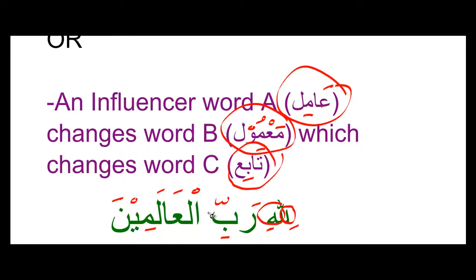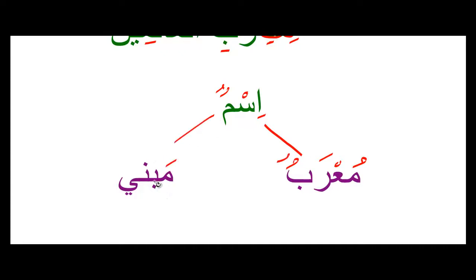Once we've understood that, we can categorize the ism as the grammarians did — in terms of words where the ending changes and words where the ending doesn't change. The words in which it changes are known as Mu'arab, and the words in which it doesn't change are known as Mabini.